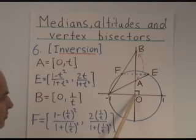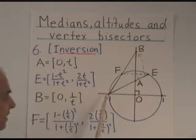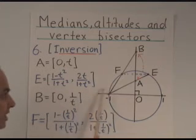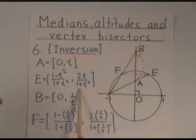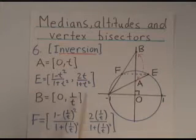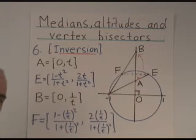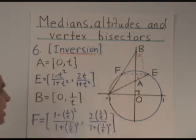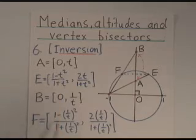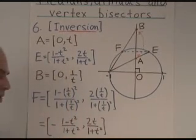So what we do first of all is we scale our diagram so that the circle has radius 1. And then we can choose this point A to have coordinates 0, t. The thing we need to know is that in that case this point E is given by a rational parameterization of the circle. In terms of t, it's (1 minus t squared) over (1 plus t squared), 2t over (1 plus t squared). Now if we look at the point B with coordinates 0, 1 over t.